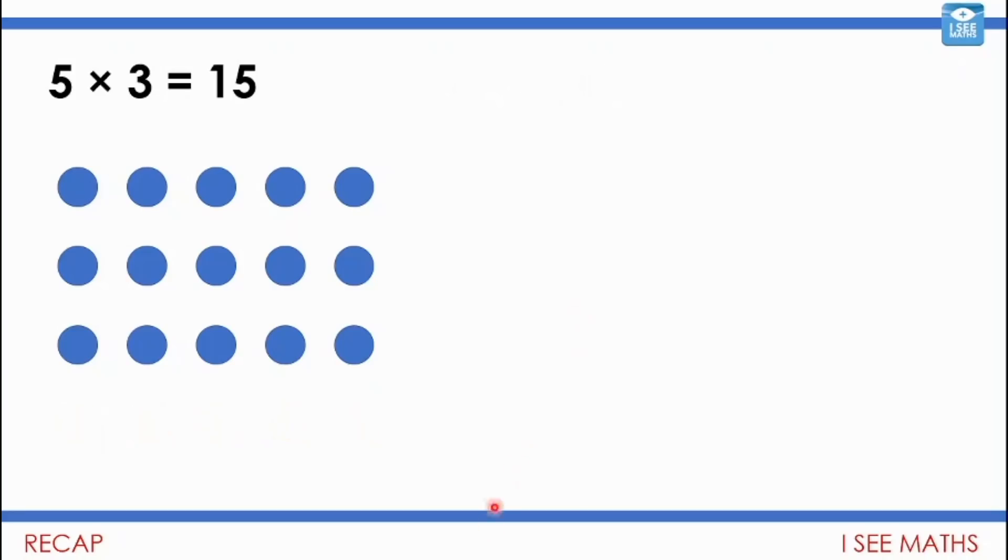Have a look at the next one. So we're going to start from five times three equals fifteen. What number sentence do we have now? Can you see? It's kind of been doubled. So we did have five times three equals fifteen. And now we've got ten lots of three. It's still lots of three, but this time we've got five lots of three and another five lots of three. It's ten lots of three in total.